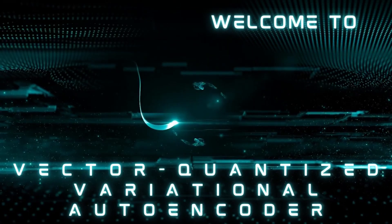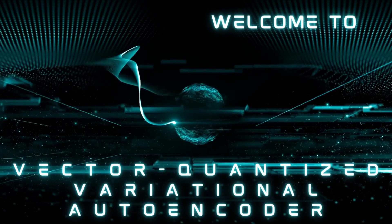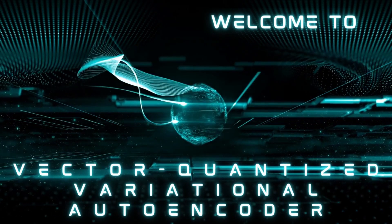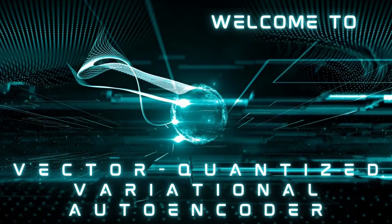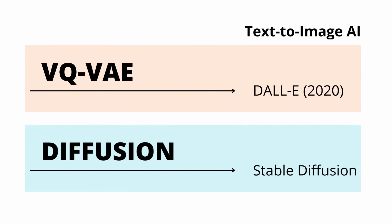Vector quantized variational autoencoders — what are they and why do we need them? Looking at our overall roadmap on text-to-image AI tools, we are finally in the final lane to explain how DALL-E works.